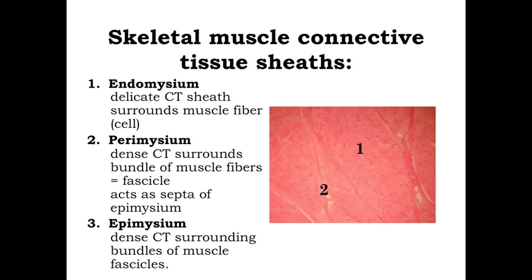Especially within skeletal muscle, we're going to have very distinct connective tissue sheaths. This lower magnification view of a cross-section through muscle shows different profiles of skeletal muscle cells. Outside of these cells, what we have is an endomysium — a delicate connective tissue sheath surrounding individual muscle fibers and helping to attach them to one another. The coarse pink staining of the myofilaments is visible to the inside.